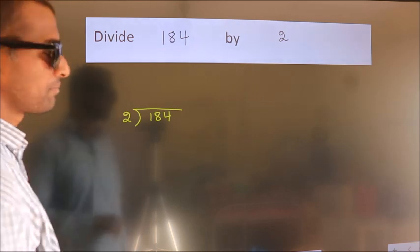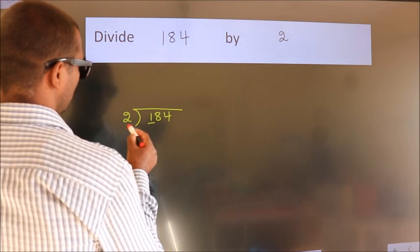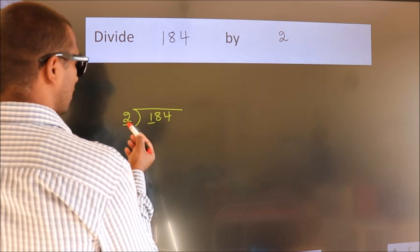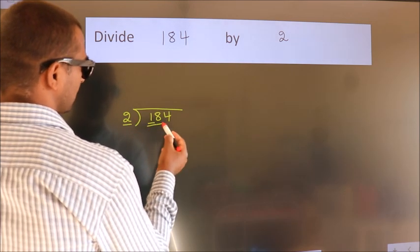Next. Here we have 1, here 2. 1 smaller than 2. So we should take 2 numbers, 18.